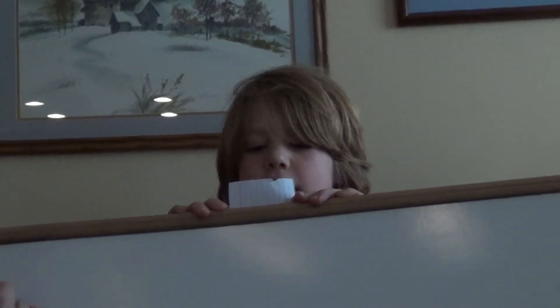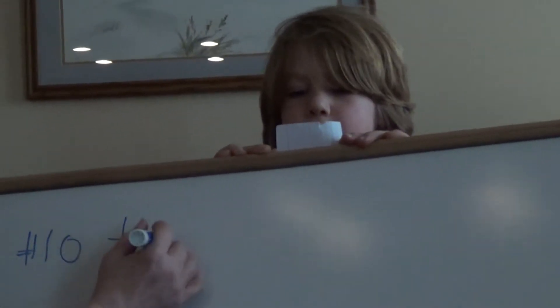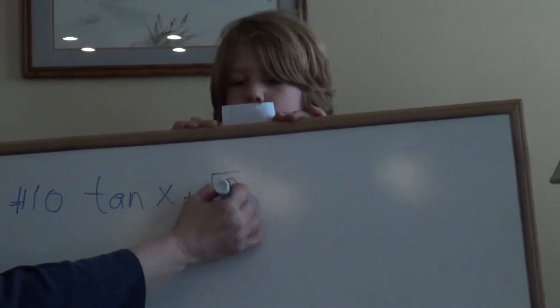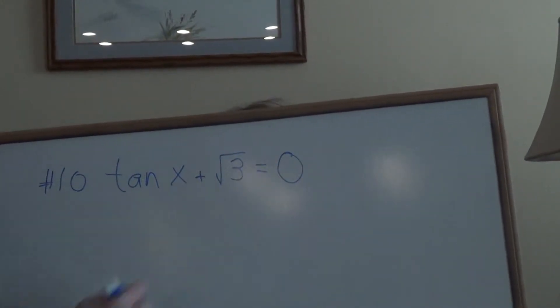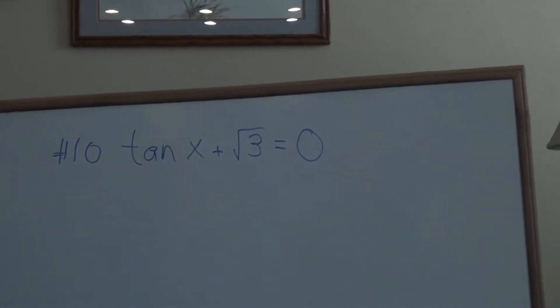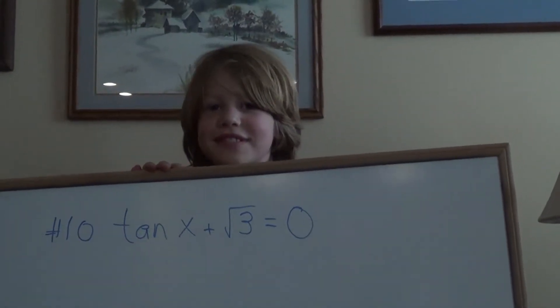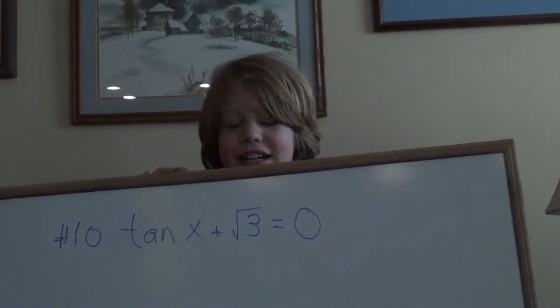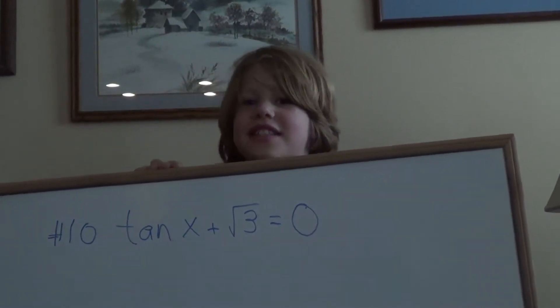Number ten. Tan x plus square root three equals zero. Very good. Come back up here. Let me introduce you. This is Kyle. And Kyle, how old are you? I'm ten and I'm a grandson. Okay, what do you like to do? I like to play sports. All right, thank you.